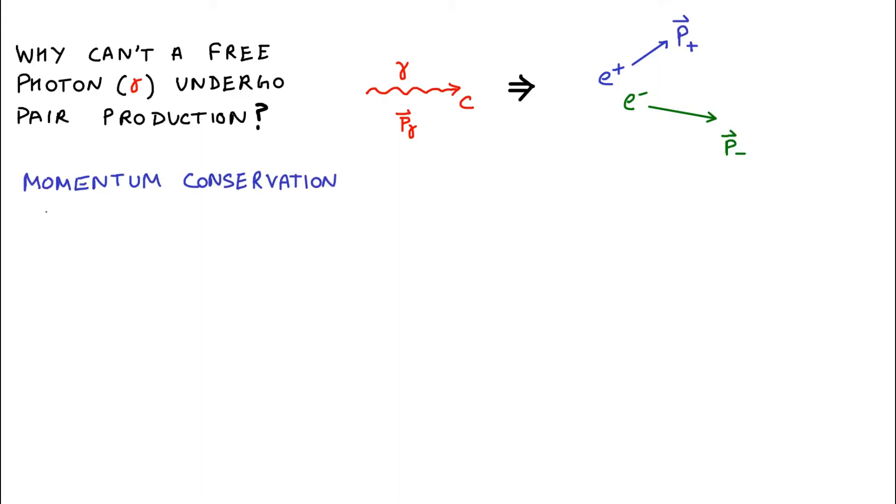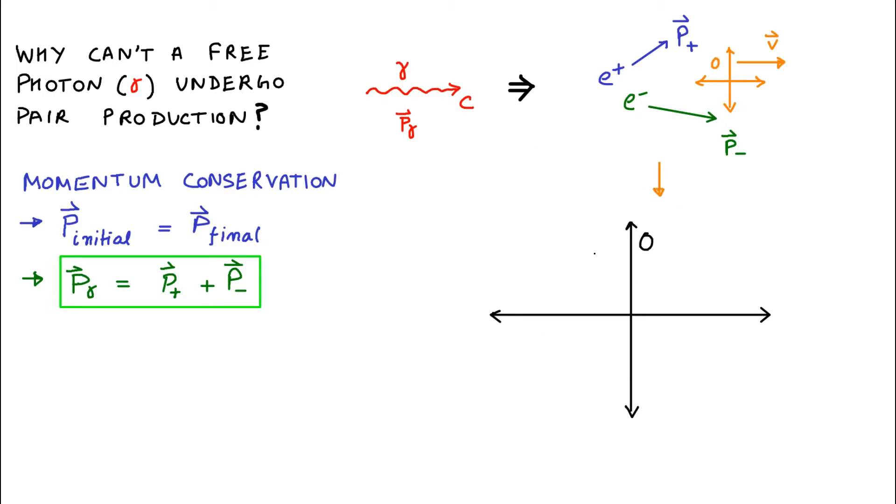This whole system is isolated, so the relativistic momentum should be conserved in all inertial reference frames. To simplify our calculations, we will choose a frame of reference, O, that moves with a constant velocity, such that both electron and positron recede from this frame in opposite directions and with equal speeds.